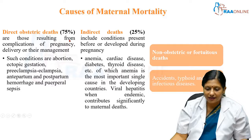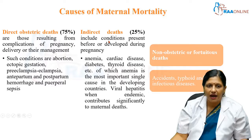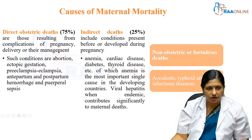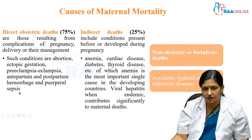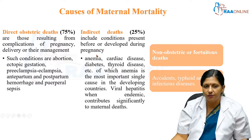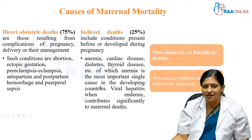The direct 75% causes relate directly to complications of pregnancy or delivery: abortions, ectopic pregnancy, pre-eclampsia, eclampsia, antepartum hemorrhage, postpartum hemorrhage, and puerperal sepsis. Indirect deaths (25%) are due to conditions present before or developed during pregnancy — such as anemia, cardiac disease, diabetes, and thyroid disorders — of which anemia is the most important single cause in developing countries. Viral hepatitis, if endemic, can also contribute.